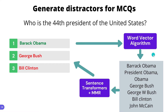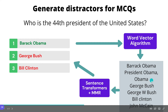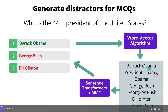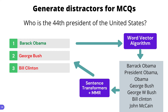The problem is that there are several issues. One is there could be spelling mistakes — Barack with a double R. Another issue is that some results refer to the same object: President Obama refers to Barack Obama, and Obama also refers to Barack Obama. Similarly, George Bush and George W. Bush are the same person. How do you efficiently filter these things so that you only keep unique items? If you directly use word vector algorithms, many distractors end up repetitive or semantically the same.